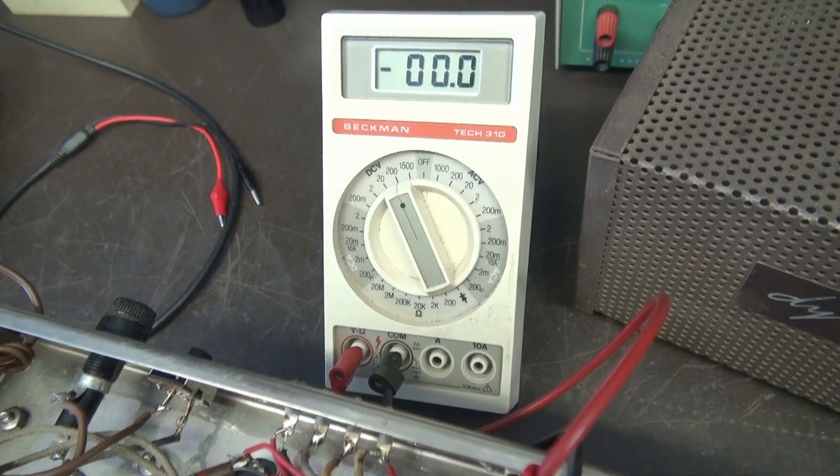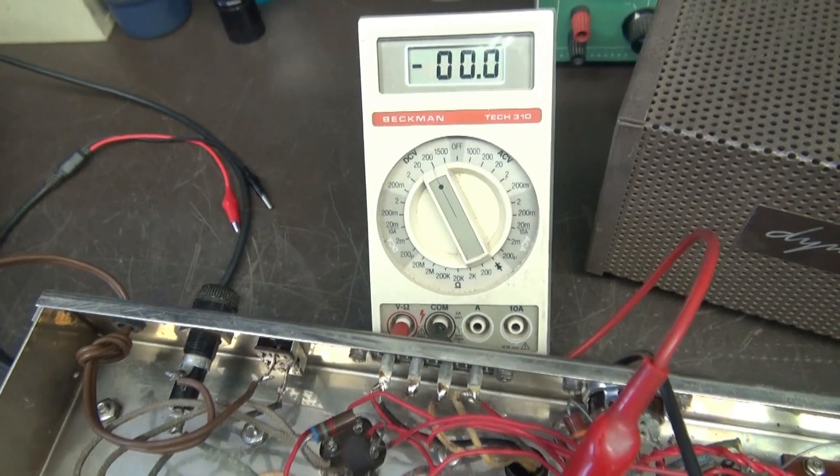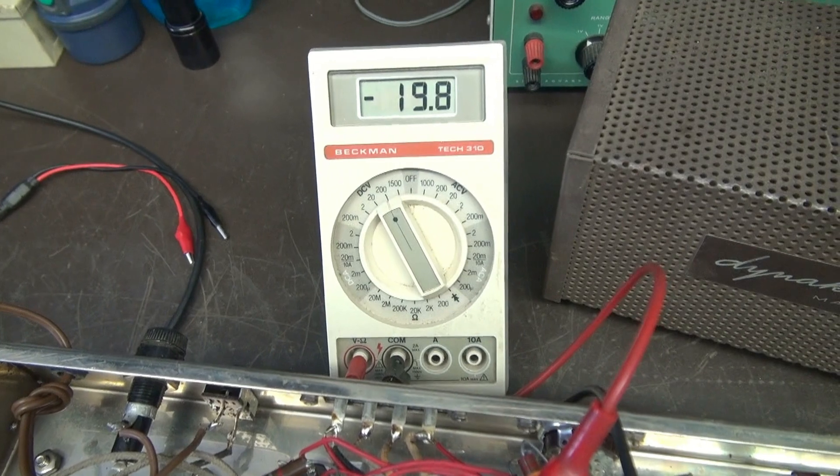Because if you don't do that, you're going to eat your output tubes. So here's the Variac coming up. You can see we've got negative bias. That's a good thing.